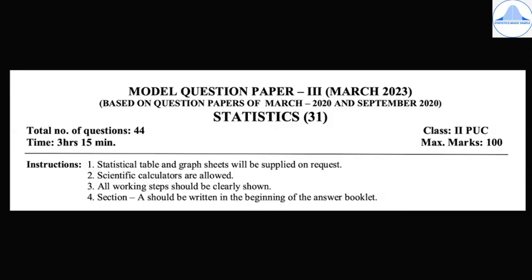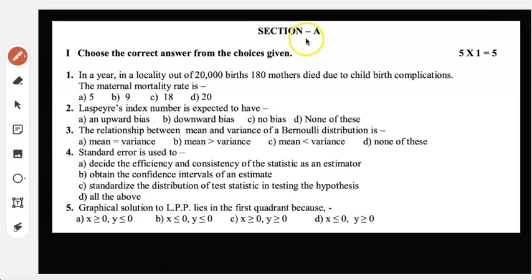Most important is Section A should be written in the beginning of the answer booklet. Section A, the first mean: choose the correct answer from the choices given. There are 5 one-mark questions. First question: in a year in a locality out of 20,000 births, 180 mothers died due to childbirth complications. The maternal mortality rate is 5, 9, 18, or 20.